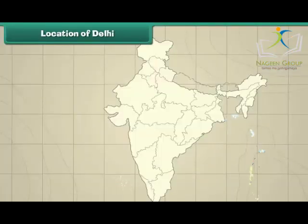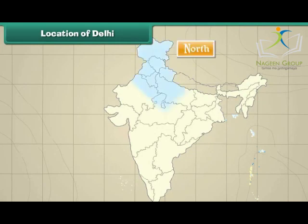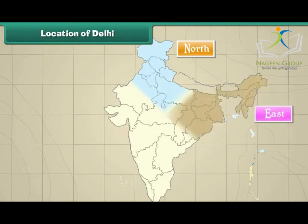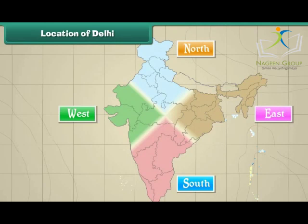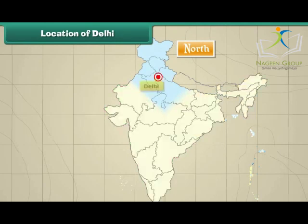Location of Delhi. This is the map of India. The four major directions North, East, South and West are marked on the map. Delhi is the capital of India. It is located in the north of India.